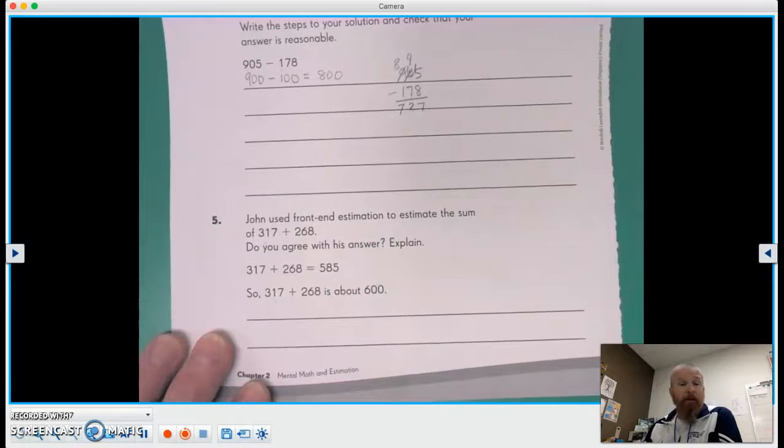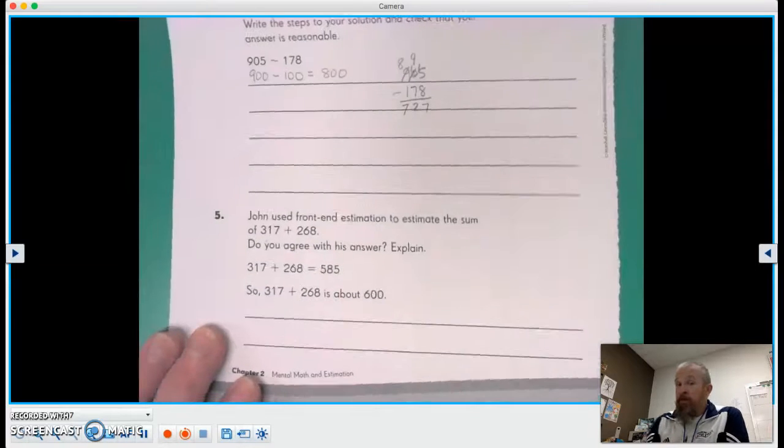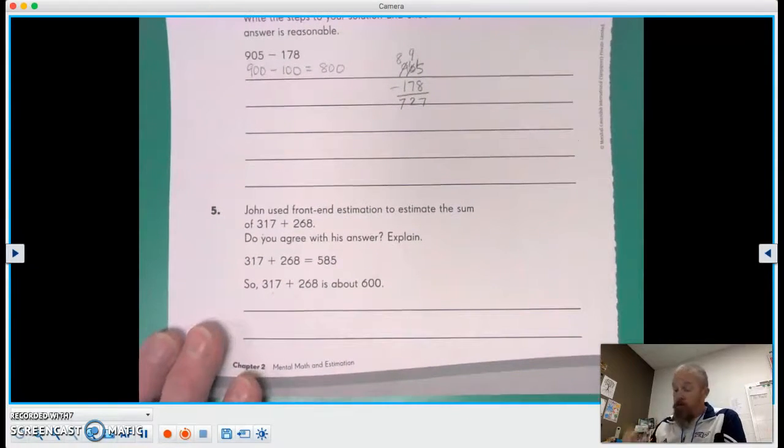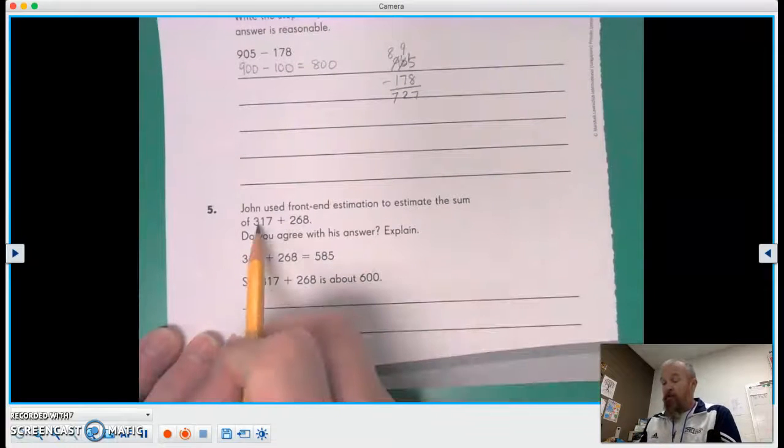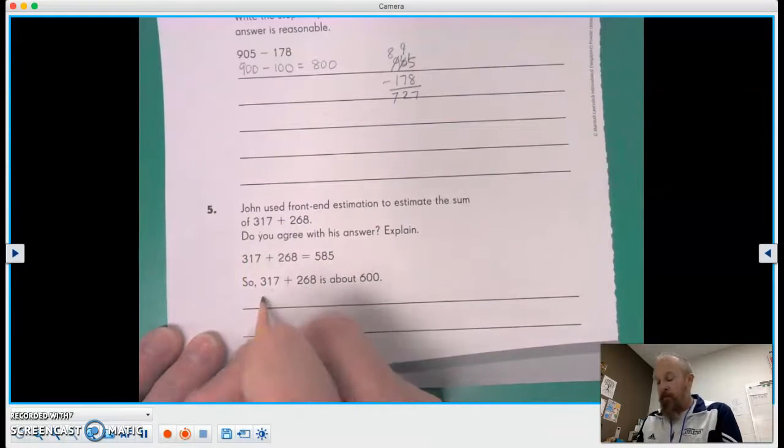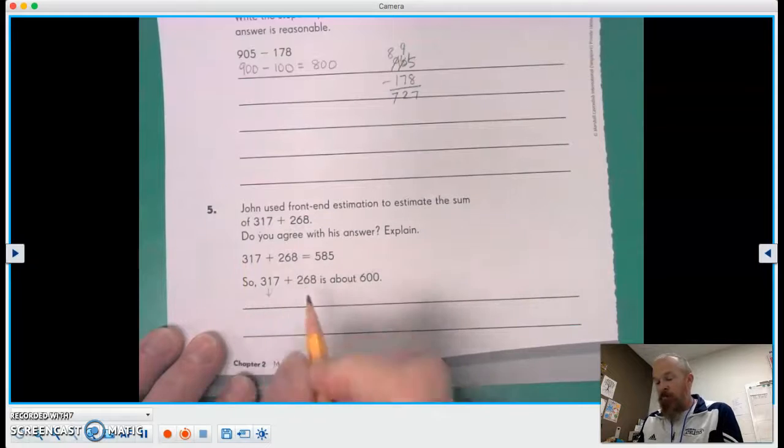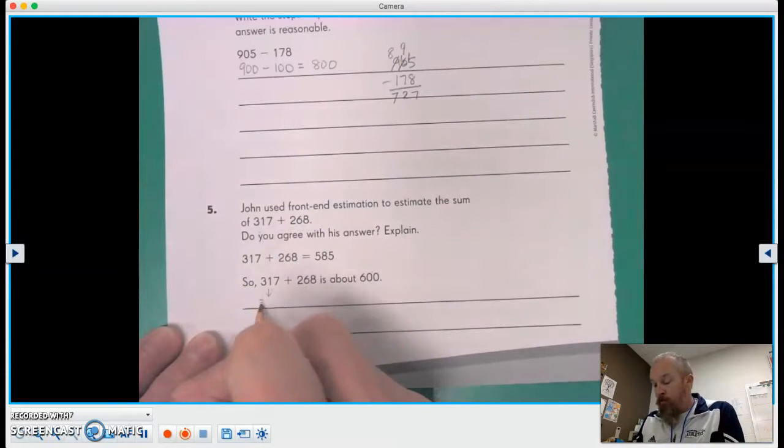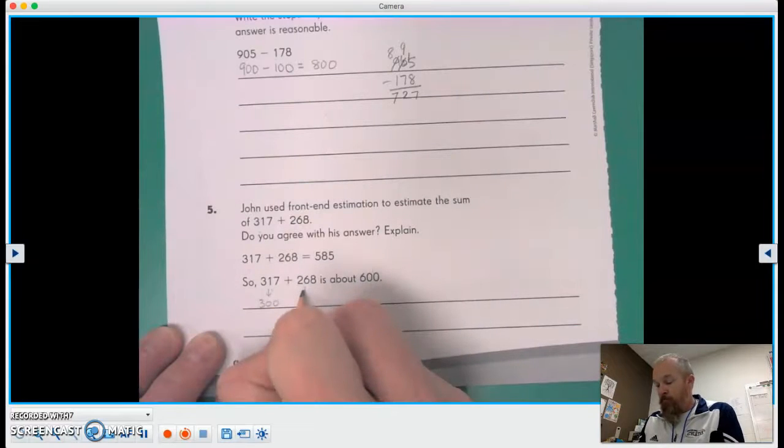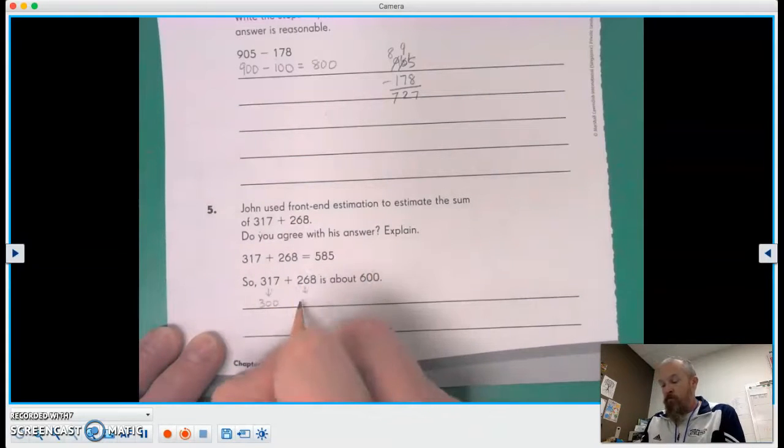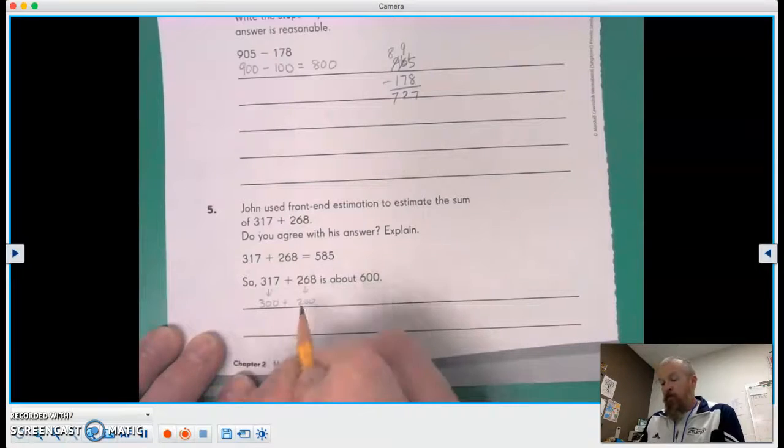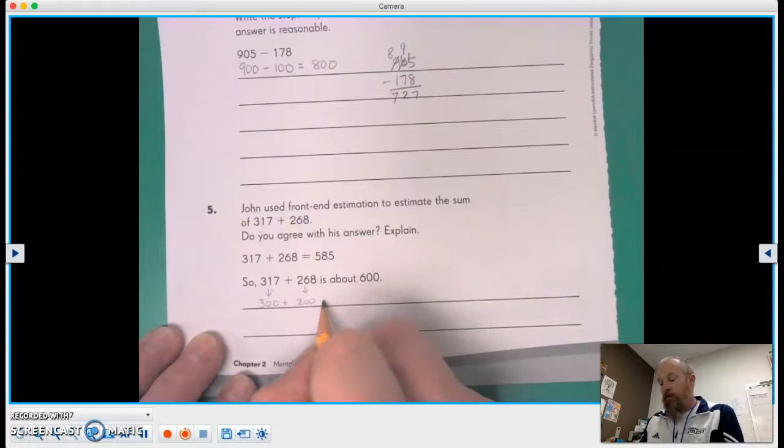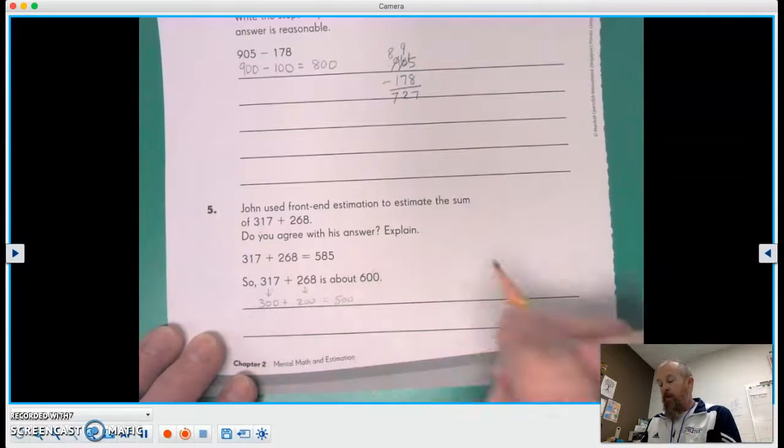I don't agree with that either. You're right. If we're using front-end estimation. If we're going to use the front-end estimation, 317, the three says 300. And I'm just gonna draw an arrow because that's what we had in the other pages that we're doing. So this would be 300. Front-end estimation, 200. 300 plus 200 equals 500.